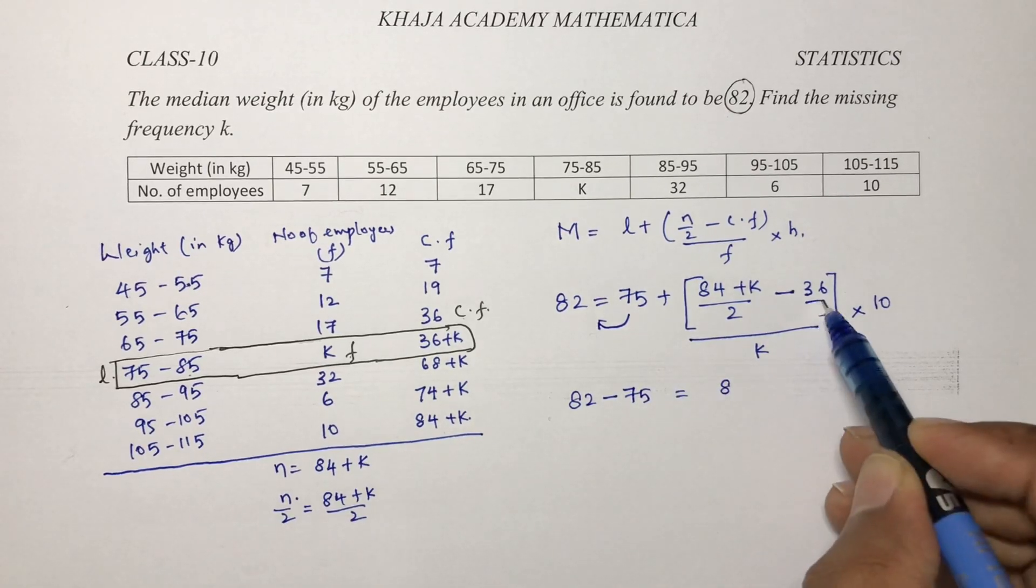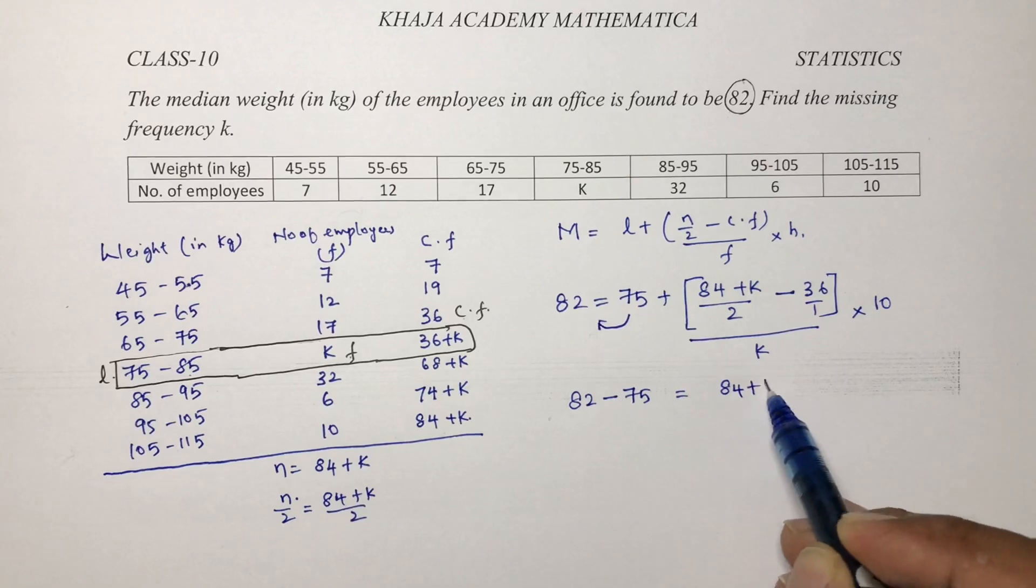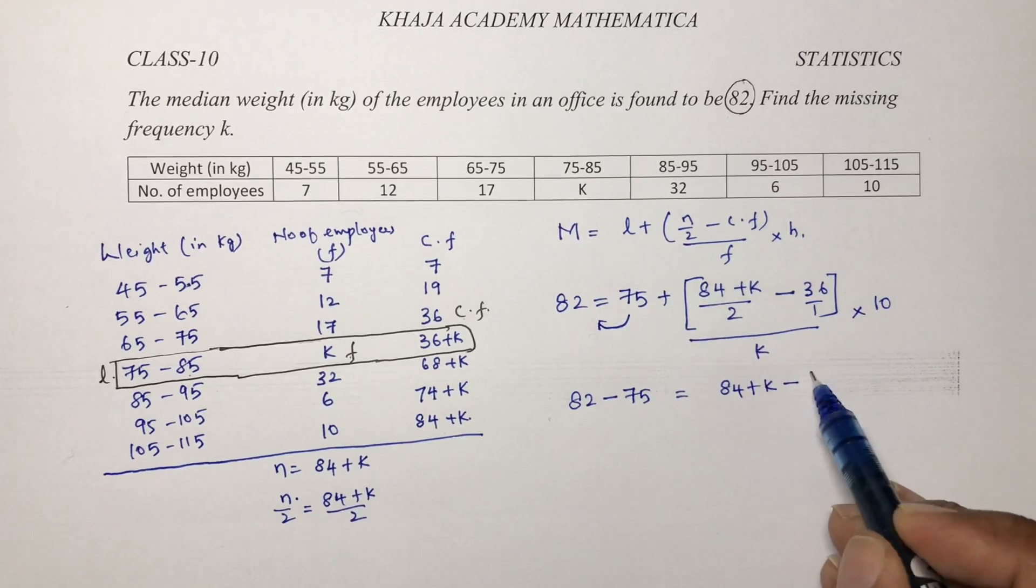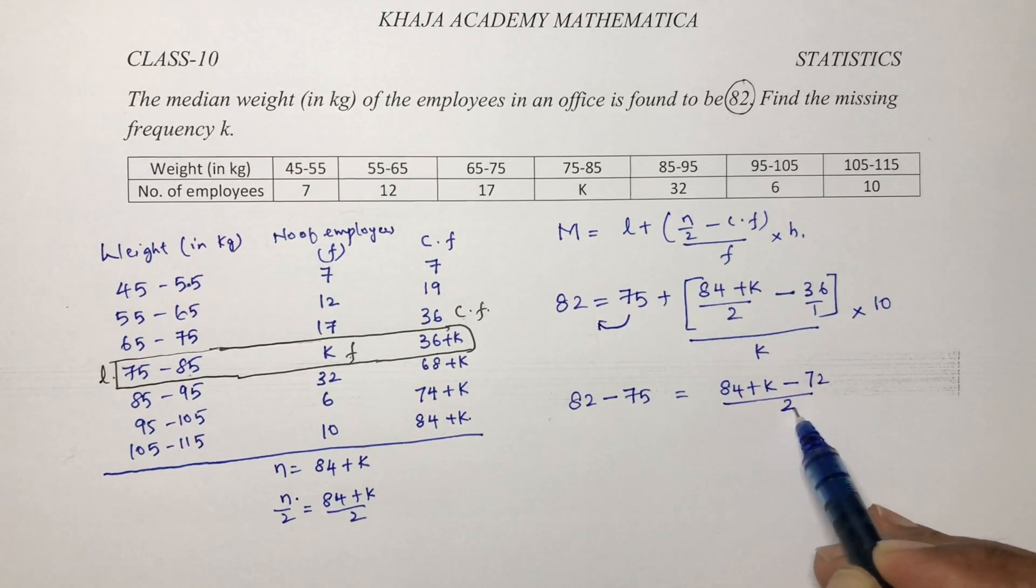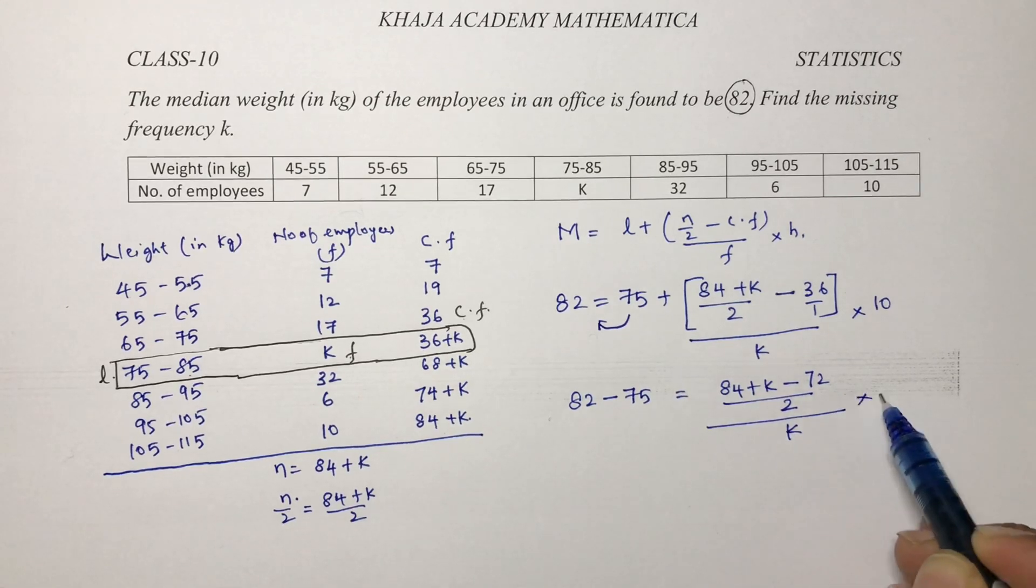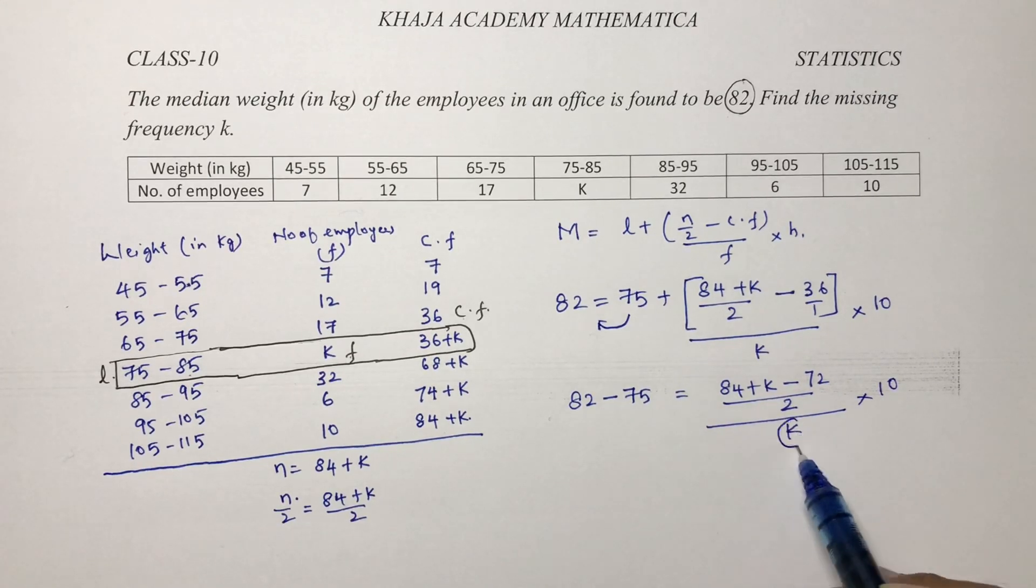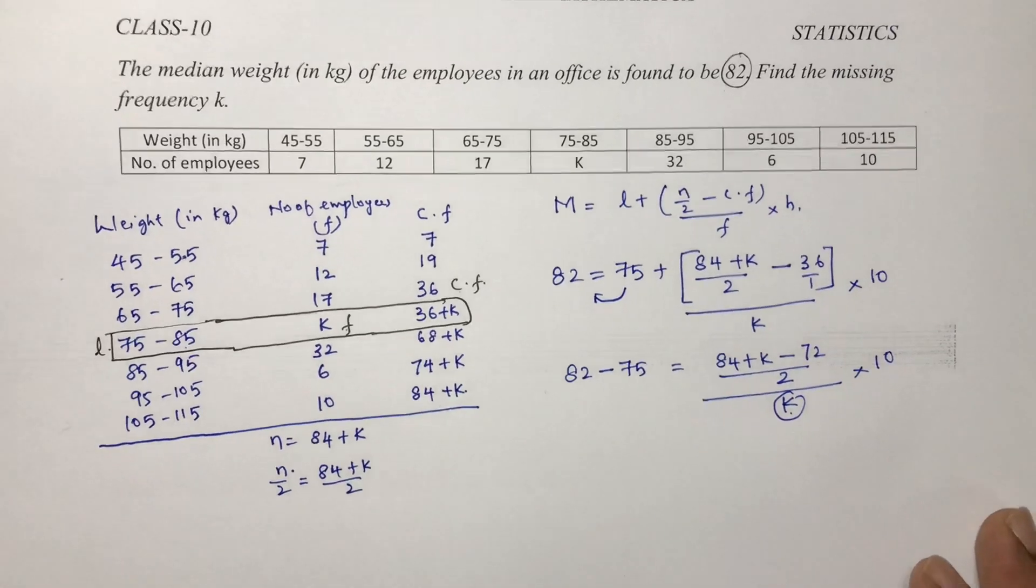82 minus 75 equals, here we will take lcm, 84 plus k minus 2 times 36 is 72 by 2 by k into 10. If we will transpose this k this side.